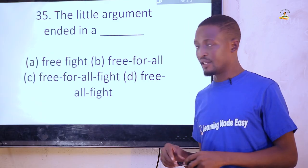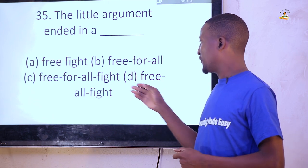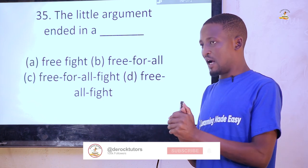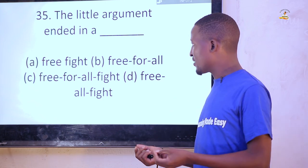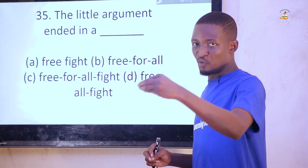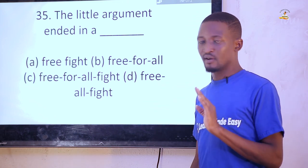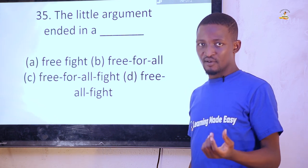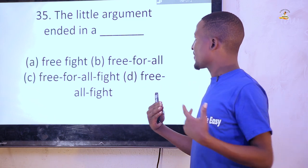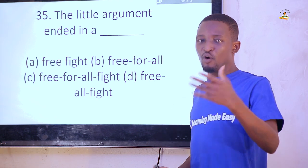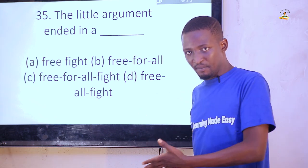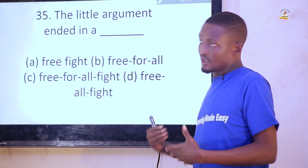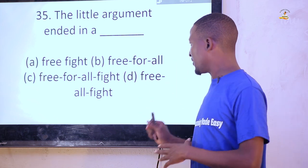'The little argument ended in a dash.' Options: free fight, free for all, free for all fight, free all fight. We are talking about an uncontrollable fight involving many people — we call it a 'free for all.' You don't need to add the word 'fight' because a free for all is already a type of fight — adding it becomes tautological. So: the little argument ended in a free for all — option B.